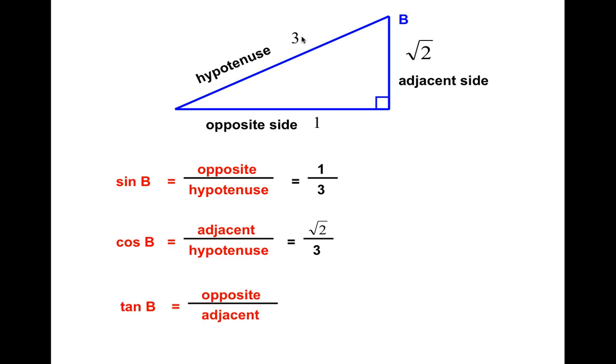Finally, tangent is opposite over adjacent. So the opposite is 1. The adjacent is the square root of 2. So it's 1 over the square root of 2.